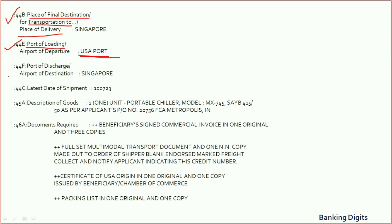Field 44C — port of discharge — means transport documents should evidence that goods have been discharged at this port. Apply similar logic as we discussed for Field 44E.